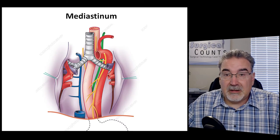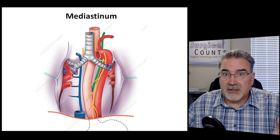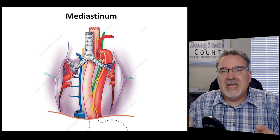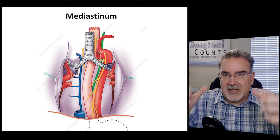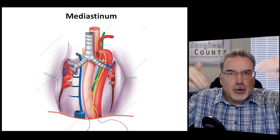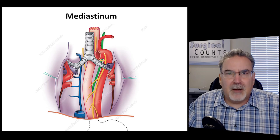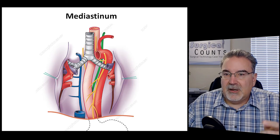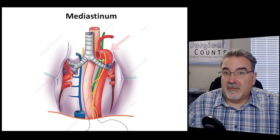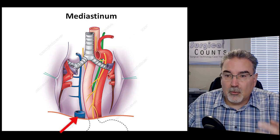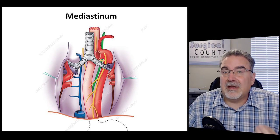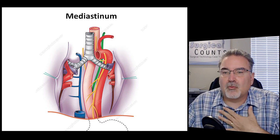Within the thoracic cavity, inside the ribs, we have the lungs and heart, plus other structures contained in the mediastinum — the central core of the thoracic cavity where all the tubes and plumbing run through. In the mediastinum, we have the trachea splitting into the bronchi, the esophagus running down to the stomach, major vessels like the aorta and vena cava, several nerves including the phrenic nerve, and the thymus gland — an immune system gland that sits right behind the sternum.